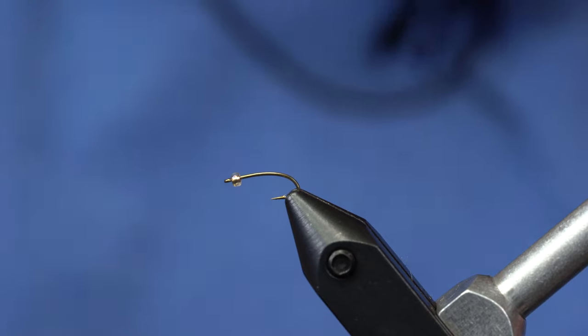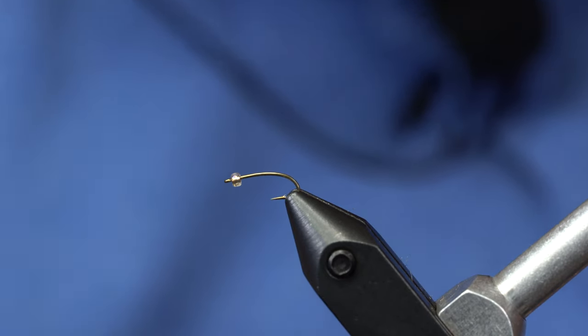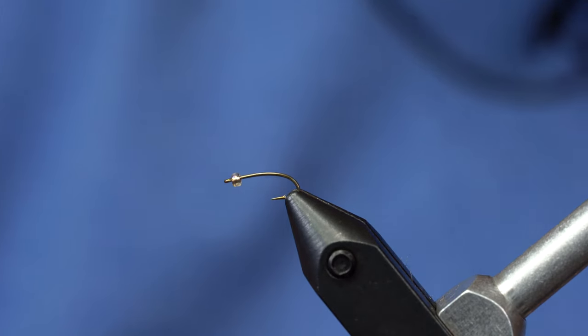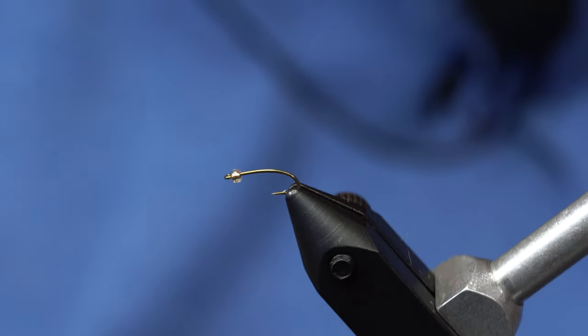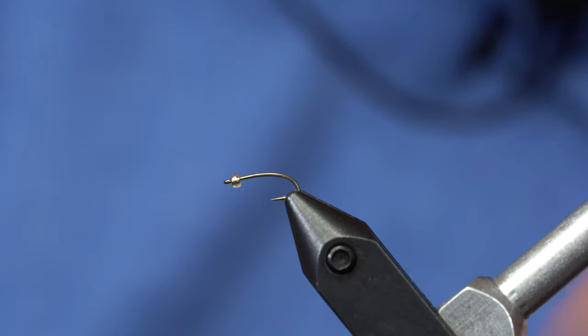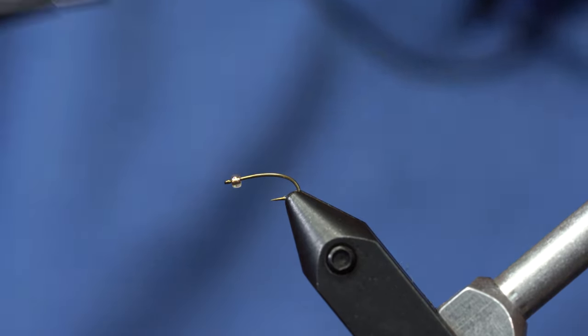This is a cool little Betis pattern tied out of LifeFlex and just a little bit of gray feather. I've got a Tiemco 200R in the vise with a tan colored bead.